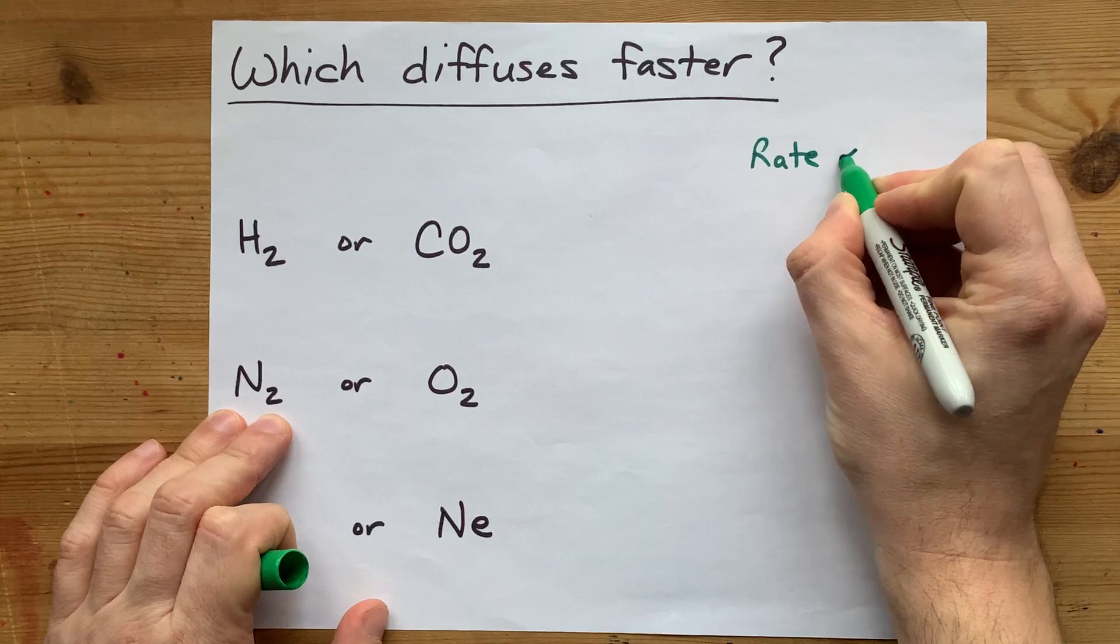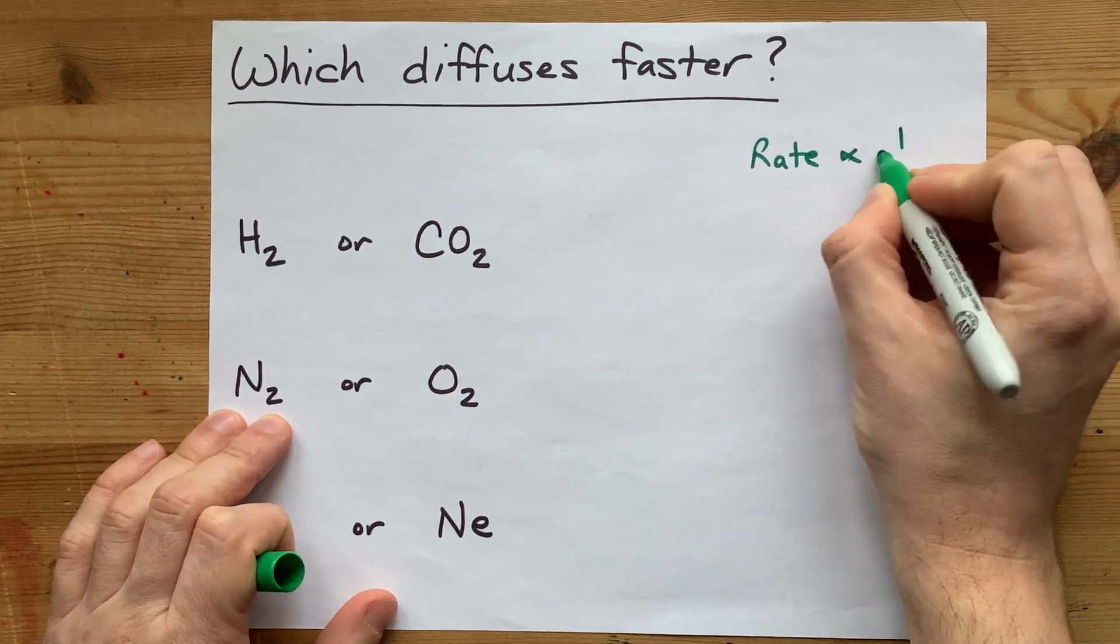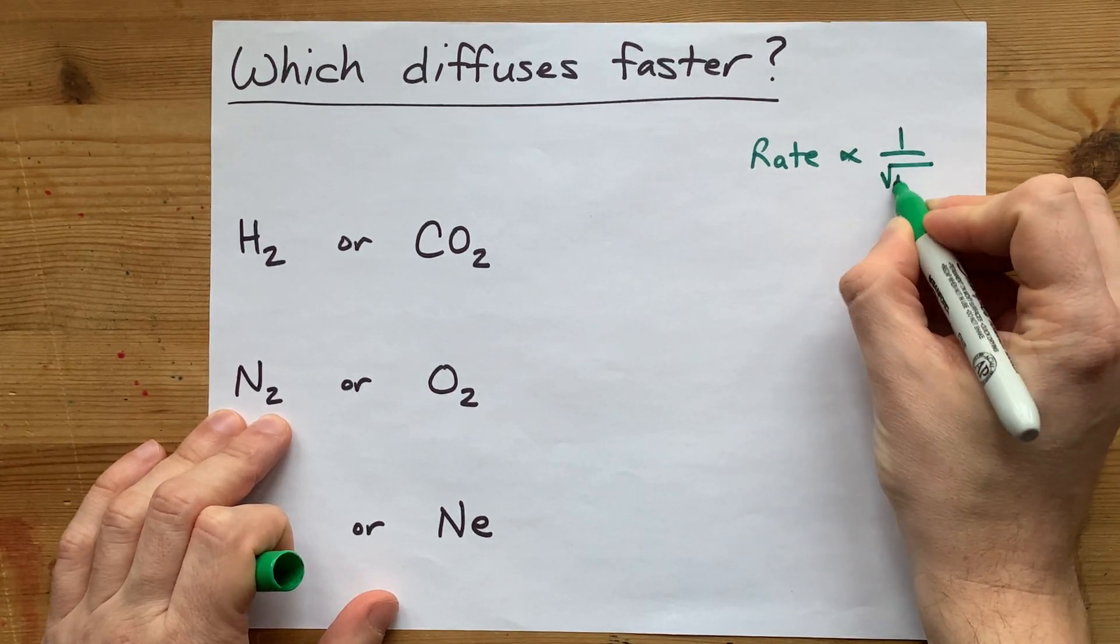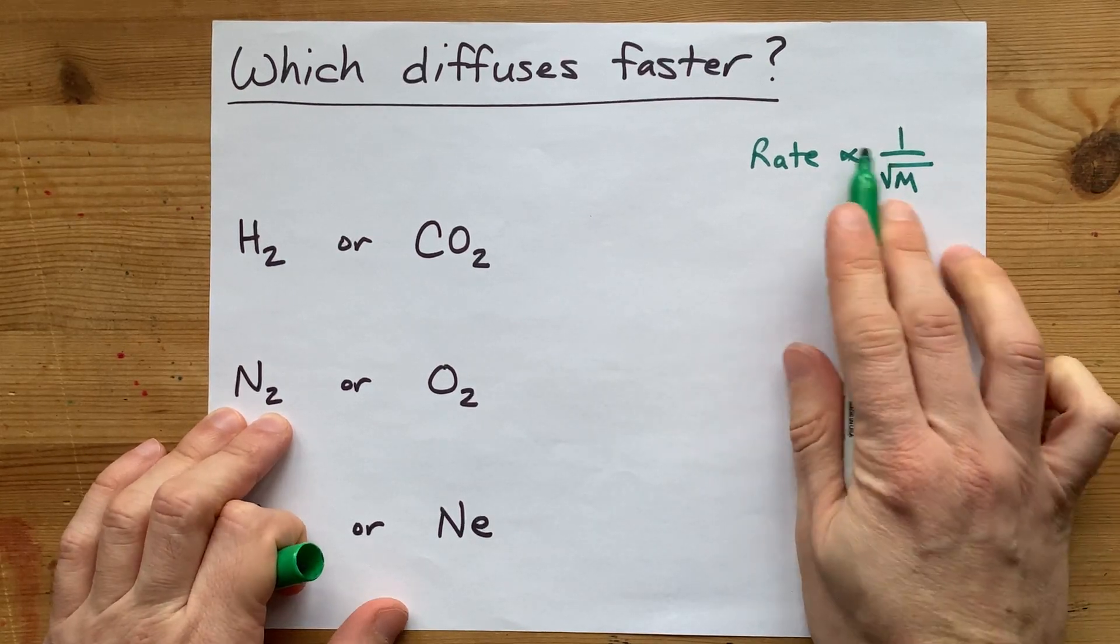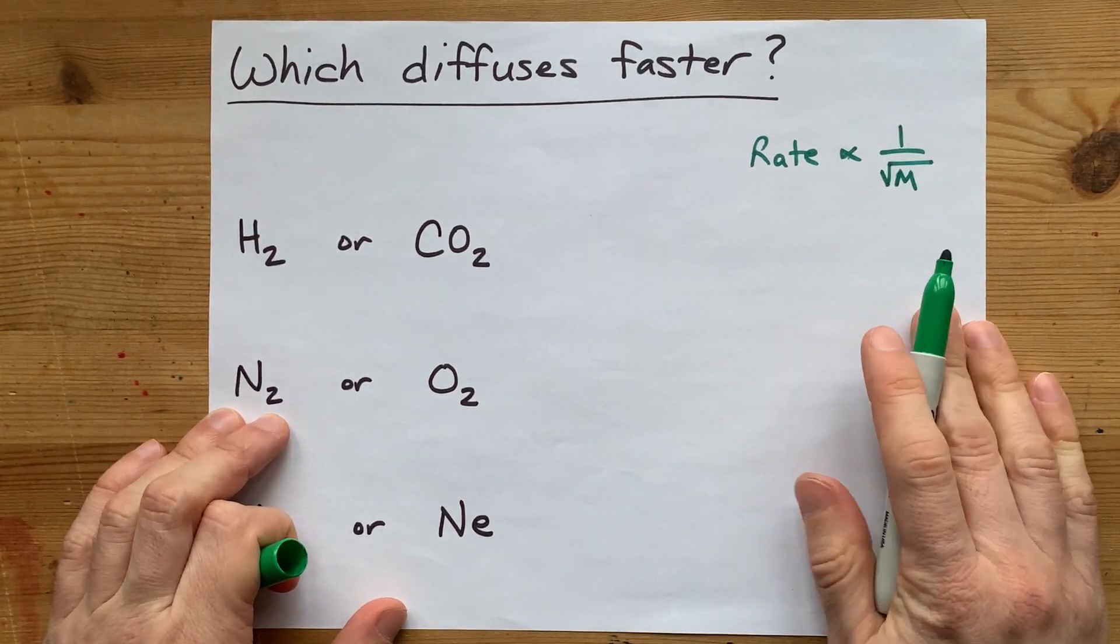The rate of both effusion and diffusion are proportional to one over the square root of the molar mass, because Graham's law is the one that says that.